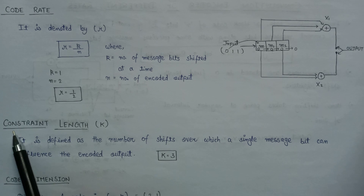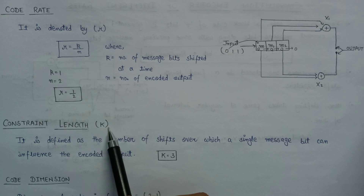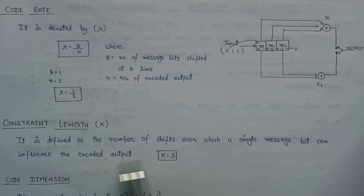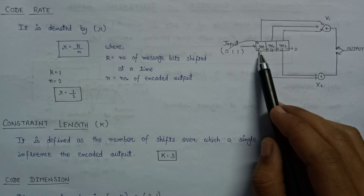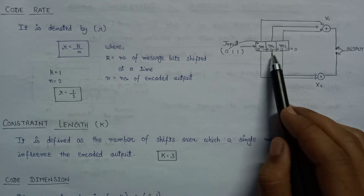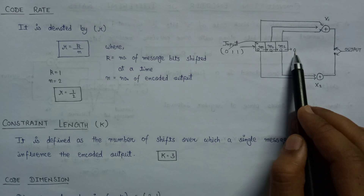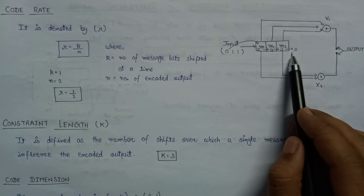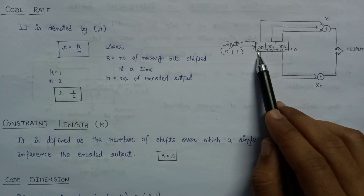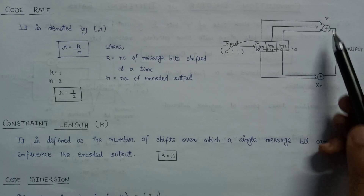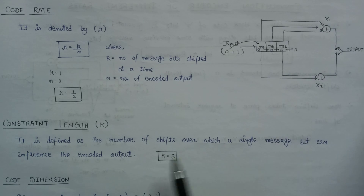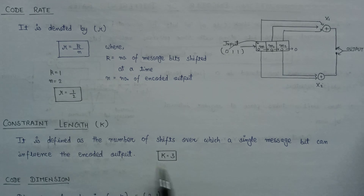Let us have a look at the constraint length, denoted by capital K. It is defined as the number of shifts over which a single message bit can influence the encoded output. If we track the message bit zero, it will be shifted here, then here, then discarded. So there are a total of 3 shifts over which this message bit influences the encoded outputs X1 and X2. That's why the value of capital K, or the constraint length, is equal to 3.